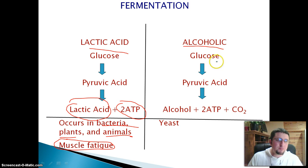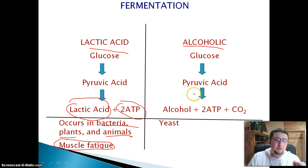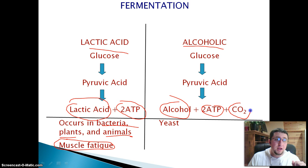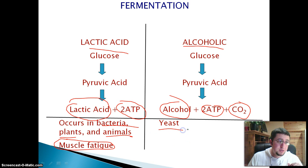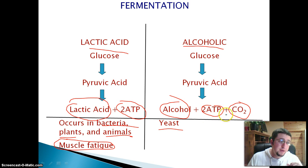We can also have alcoholic fermentation — almost the same process. We take glucose, break it down into pyruvic acid, and this time we get alcohol, ATP, and carbon dioxide. Yeast does this. Yeast has the ability to produce alcohol, a little bit of ATP, and carbon dioxide.